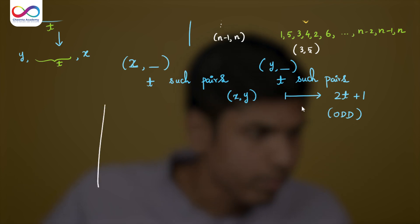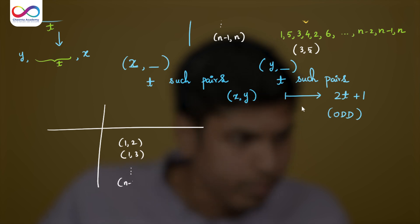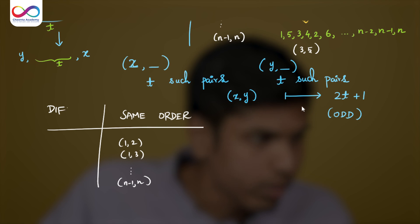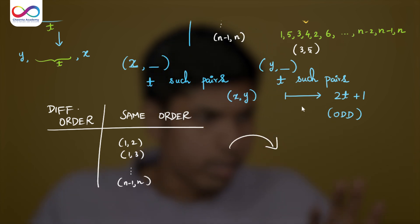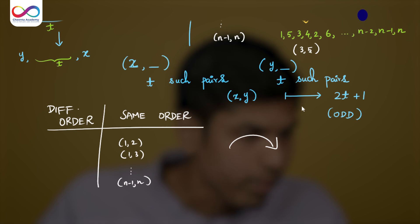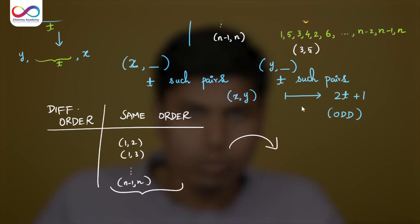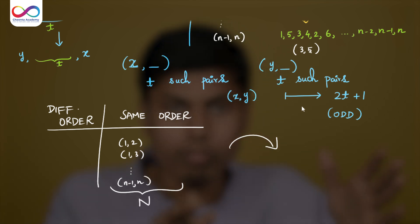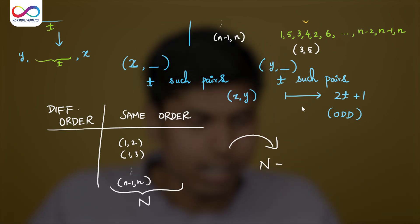That means there are 2t plus 1 pairs that transition from first column to the second or the second column to the first. Now we observe that 2t plus 1 is an odd number. So in the start of the sequence, we had all the unordered pairs in the second column, that is the same order column. The first column is our different order. Now in each move, there is odd number of elements moving out and coming in of the same order column. Thus the number of elements, say it is n choose 2, let's call it as just capital N, the number of unordered pairs. We subtract or add odd number from this in a move.